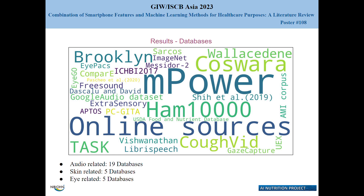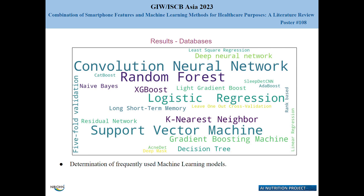We also tried to find out about the kinds of machine learning models that have been applied and determined the frequency of the use of such models. As can be seen from the figure, convolutional neural network, random forest, support vector machine, and logistic regression remain the most commonly used machine learning models. The use of models varied across studies, with some studies using multiple models and comparing the results, while others used only one model for analysis.